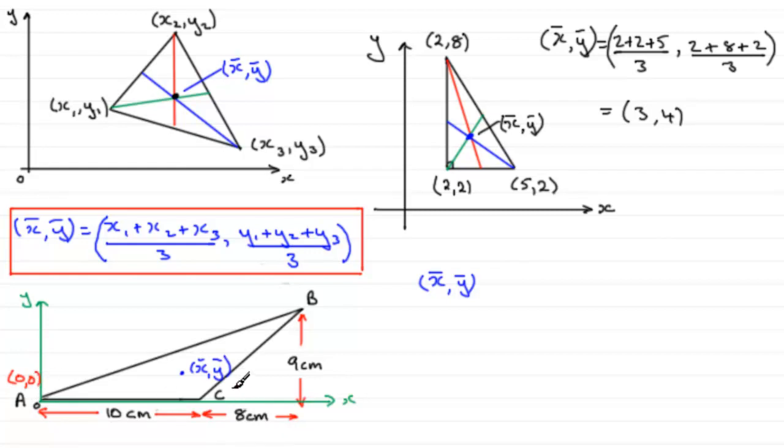The coordinates of C, well that will be (10, 0). And the coordinates of B must be 18 across and 9 up, (18, 9).